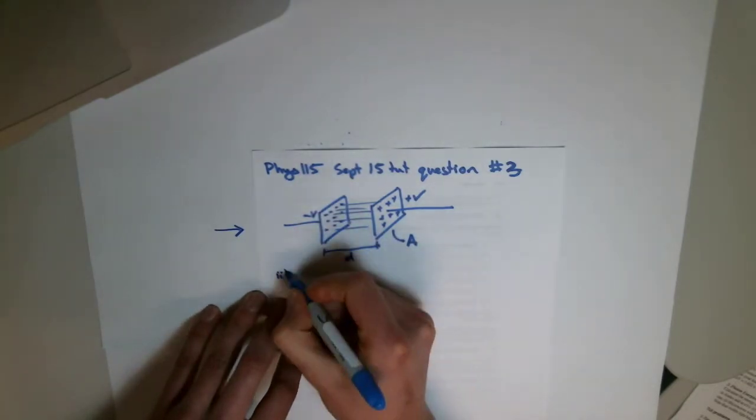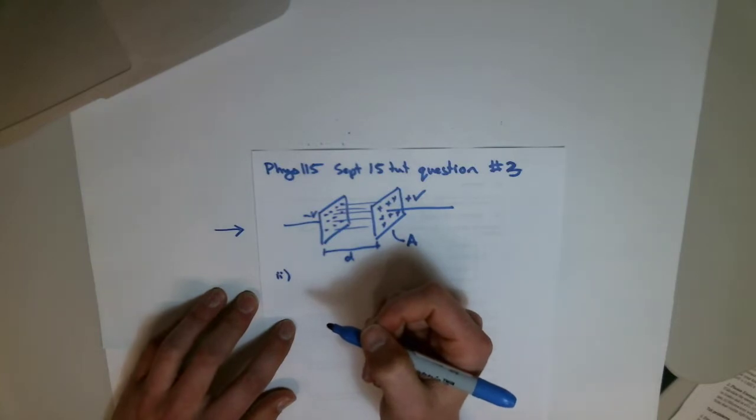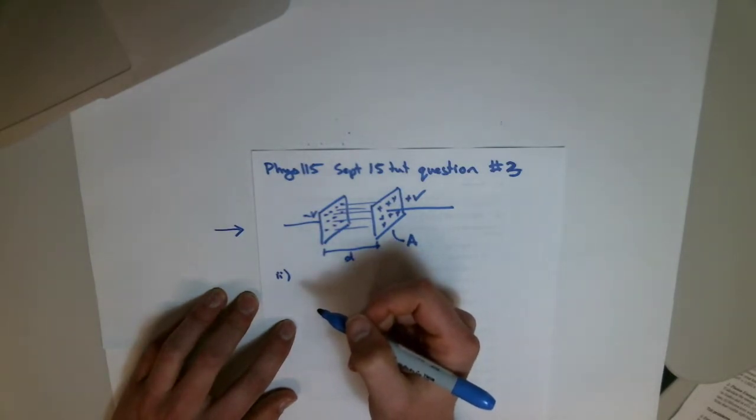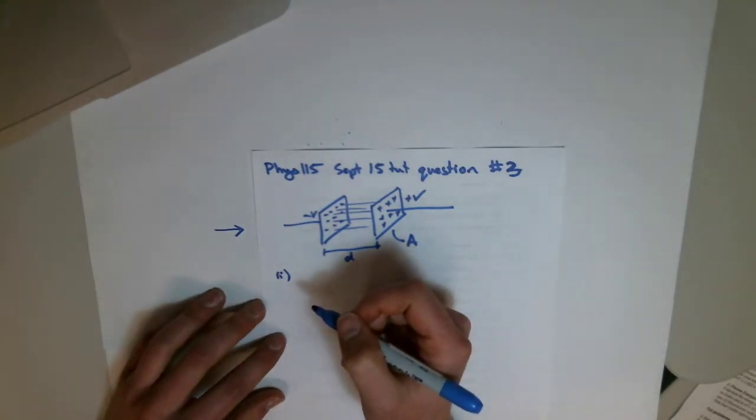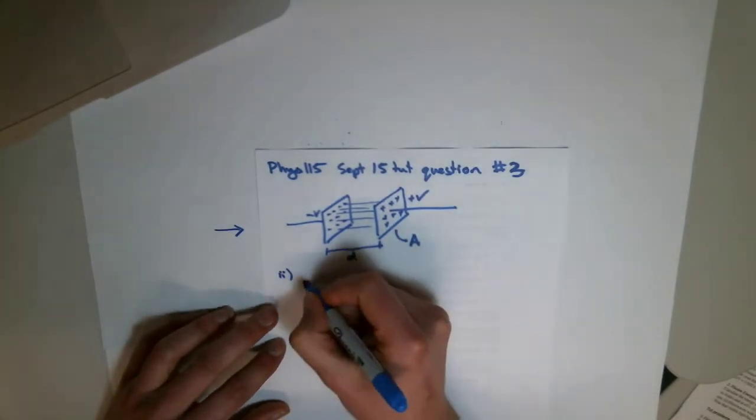we've been asked to describe the energy required to charge the capacitor. We've been asked to show that the energy density, which is the energy per unit volume between the plates, is given by this. Energy density is half E0 E squared.